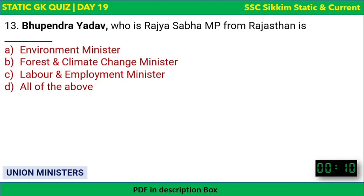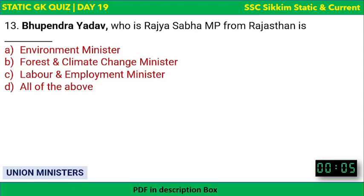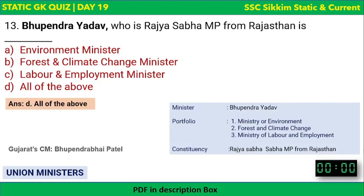Next question: Bhupender Yadav, who is a Rajya Sabha MP from Rajasthan, holds which portfolios? The options are Environment Minister, Forest and Climate Change Minister, Labour and Employment Minister, or all of the above. The answer is all of the above. He is the Environment Minister, Forest and Climate Change Minister, and Labour and Employment Minister. Do not confuse him with Bhupendrabhai Patel, who is the Chief Minister of Gujarat.